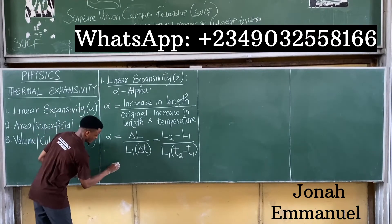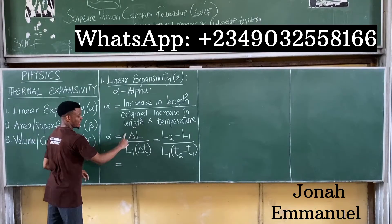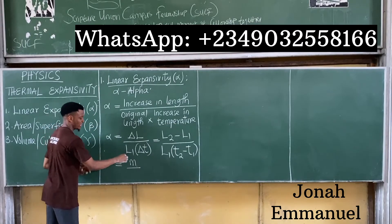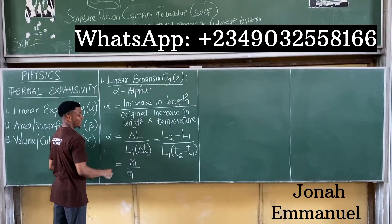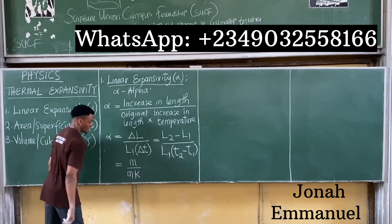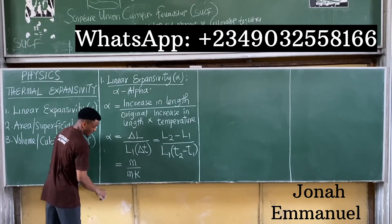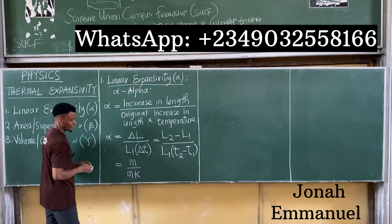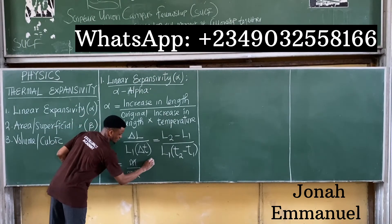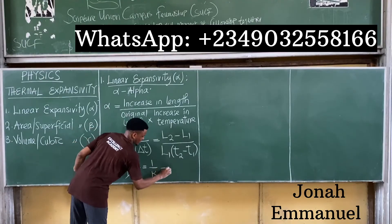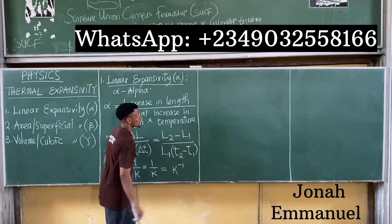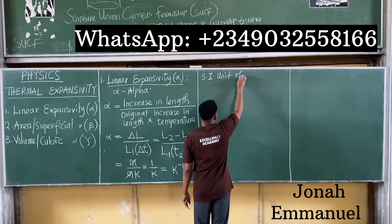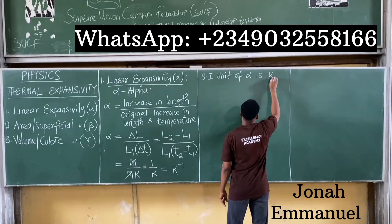The SI unit: change in length is in meters, L1 (initial length) is also in meters. Temperature is in Kelvin. The meters cancel, leaving 1 over Kelvin, which equals K to the power of negative 1. So the SI unit of linear expansivity is per Kelvin, written as K⁻¹.